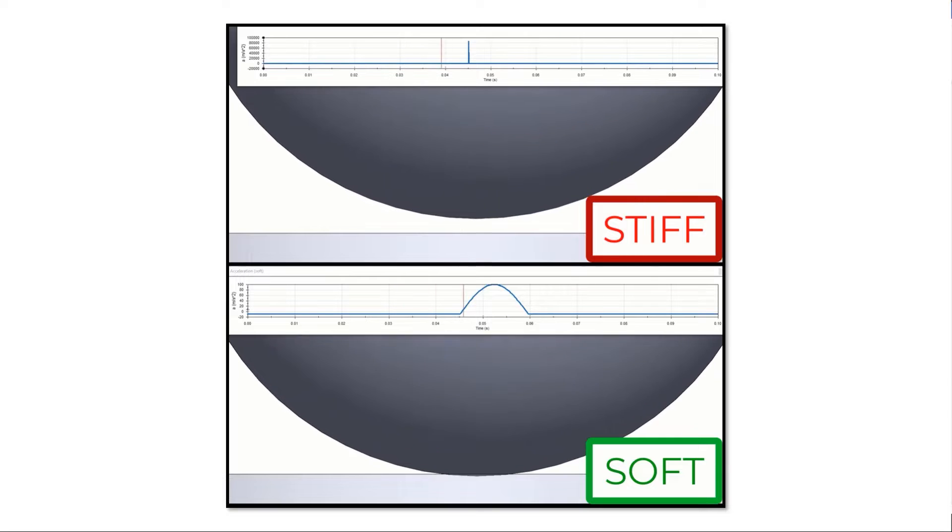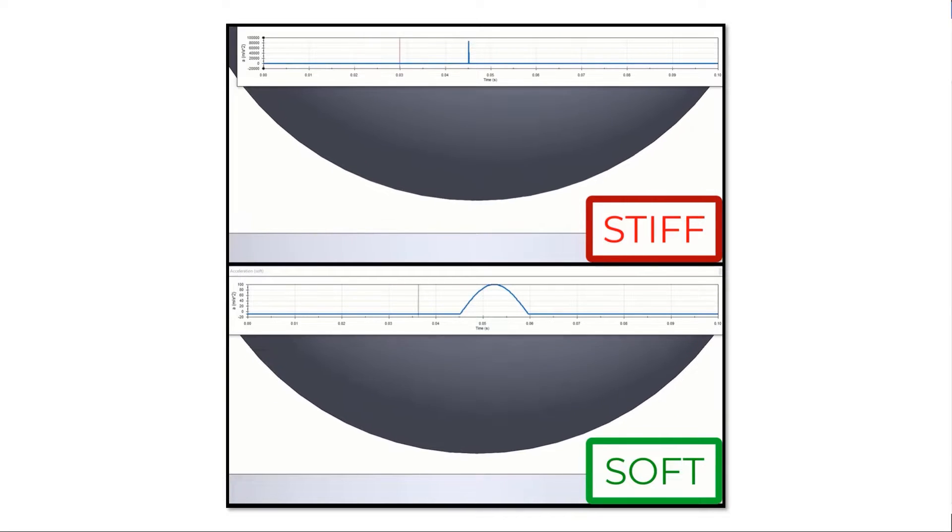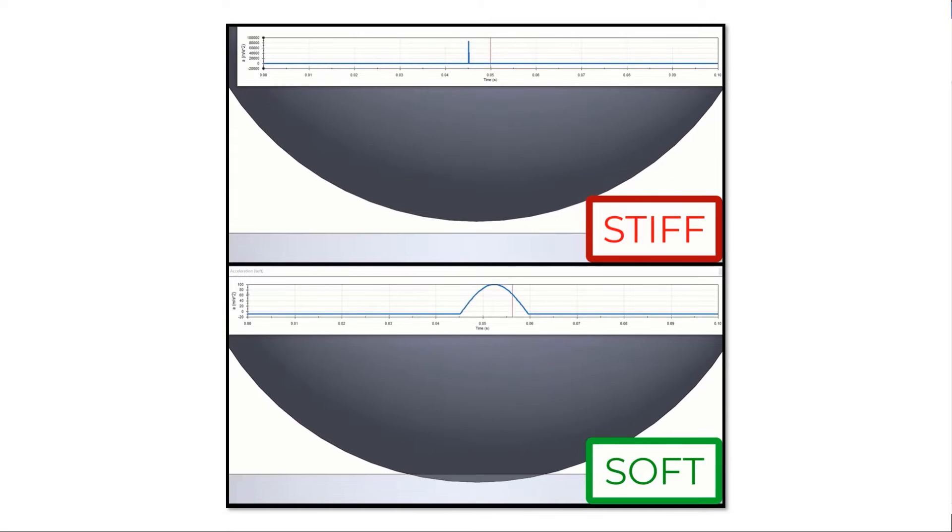Components should not occupy the same space, so contacts between components should be stiff. However, stiff contact is often difficult to work with in numerical analysis. This often requires smaller time steps, more numerical iterations, and ultimately a longer time to get a result.